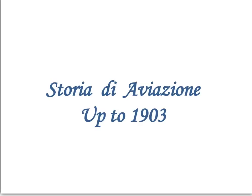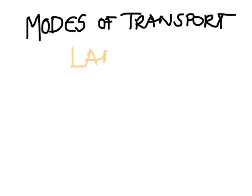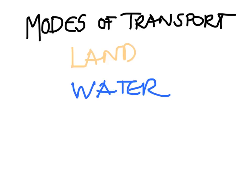This video explains the aviation history up to 1903. When we think of aviation, we can think of it as a mode of transport, and we have other modes of transport before aviation. The first one is by land, the second one is by water, and the third one is by air.